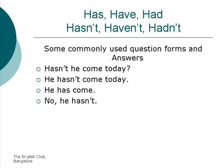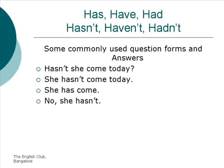Hasn't he come today? He hasn't come today. He has come. No, he hasn't. Hasn't she come today? She hasn't come today. She has come. No, she hasn't.